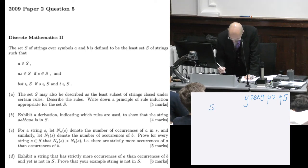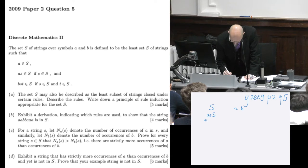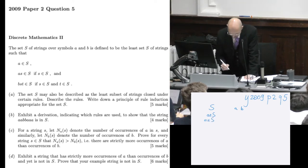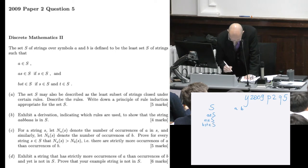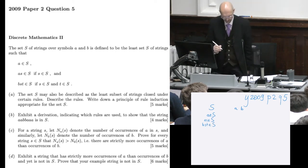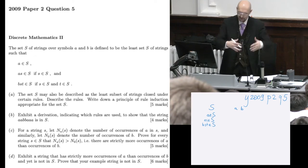The set S of strings over symbols A and B is defined to be the least set of strings such that A is in S, AS is in S if S is in S, and BST is in S if S is in S and T is in S. So S and T are the syntactic variables, A and B are the symbols of the alphabet. So that's the premise.